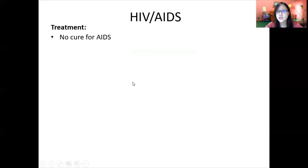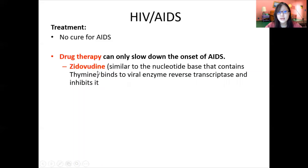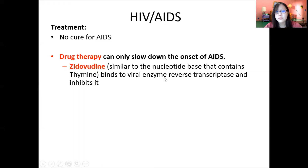You cannot cure HIV and permanently rid the virus from your body, but you can keep it down. Drug therapy can slow down the onset of AIDS. One famous drug is zidovudine, which is very similar to thymine. It binds to the enzyme reverse transcriptase and inhibits it, so RNA cannot be converted to DNA and viral DNA cannot be incorporated into the host nucleus — disrupting the life cycle of the virus.